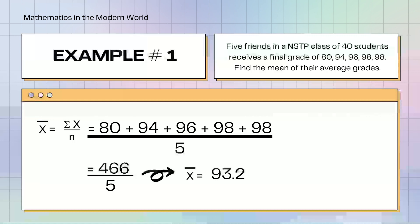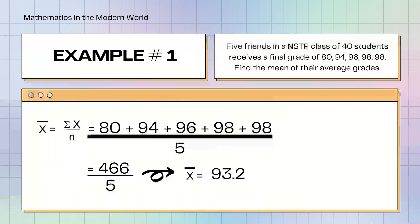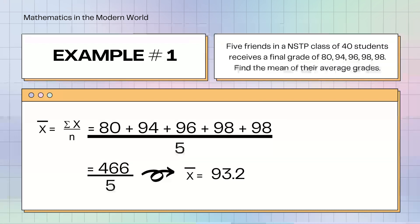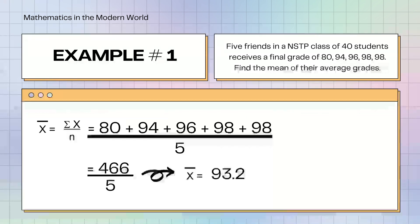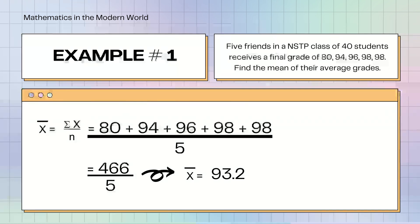Example number 1. 5 friends in a NSTP class of 40 students receives a final grade of 80, 94, 96, 98, 98. Find the mean of their average grades. Una muna natin gagawin ay i-add yung mga nakuhang grades. 80 plus 94, plus 96, plus 98, plus 98, equals 466 over 5. Bakit 5? Kasi lima sila. At ang sagot ay 93.2.